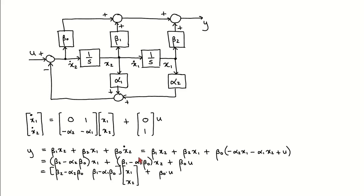However, the output should only be written in terms of the states and the input, so we need to get rid of x2-dot. To do this, we use the second line of the state equation and substitute it in. We rearrange things and write down the output equation in the required matrix form. The state equation and output equation are now in the control canonical form.